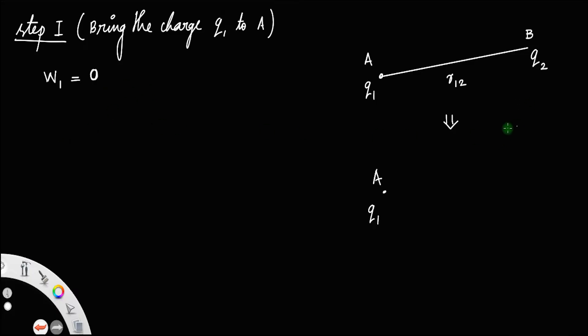Now, in step 2, then what we have to do, we have to bring the charge q2 to the point B. Suppose this charge is brought to B. Let us say that we are bringing the charge q to the point B. That is step 1.